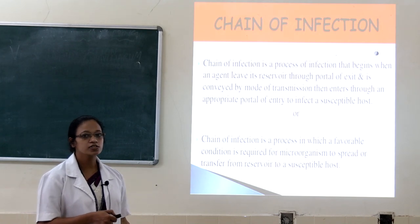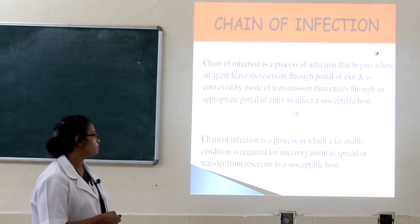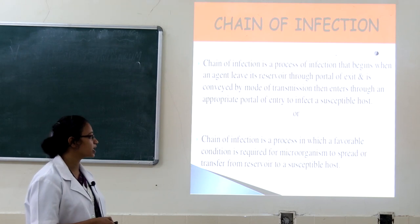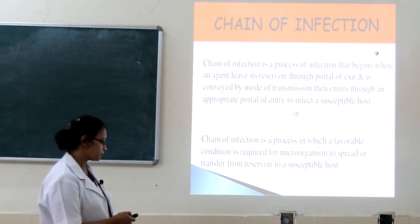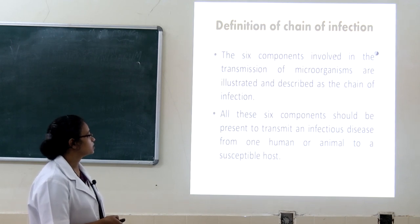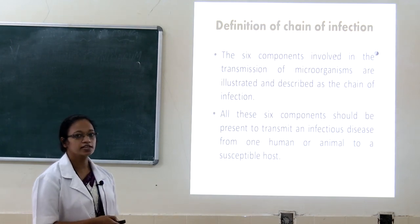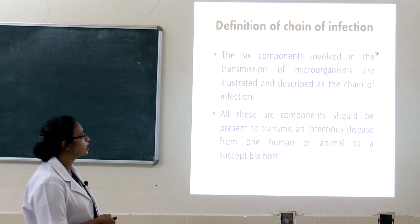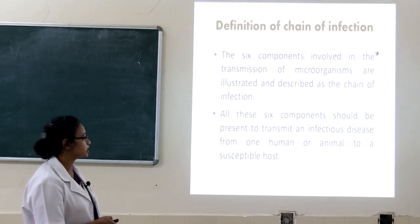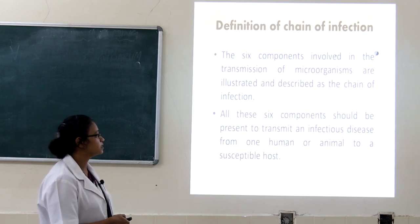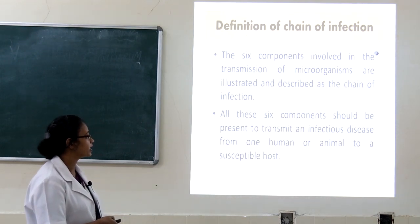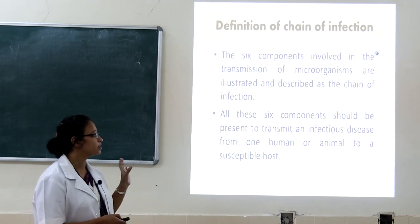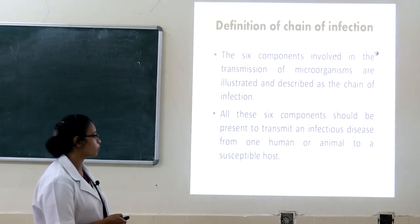The microorganism may be bacteria, virus, or any other protozoa. The chain of infection contains 6 components. All 6 components should be present to transmit an infectious disease from one human or animal to a susceptible host. If any one of these 6 components is missing, it will not result in infection in a person or patient.